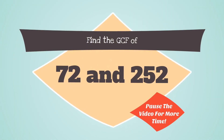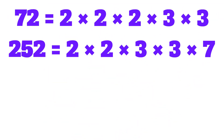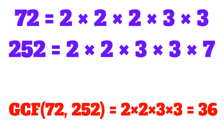Find the greatest common factor of 72 and 252. Pause the video for more time on this question — try using prime factorization to solve this problem. Both prime factorizations have two 2's in common and two 3's in common. So the greatest common factor of 72 and 252 is equal to 2 × 2 × 3 × 3, or 36.